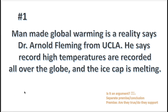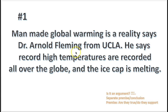We're going to grade this argument — is it a good argument or a bad argument? 'Man-made global warming is a reality, says Dr. Arnold Fleming from UCLA. He says record high temperatures are recorded all over the globe, and the ice cap is melting.' Is this an argument? Let's look for indicator words — do we see any premise indicators like 'because,' 'since,' or 'as'? I don't see any indicator words for conclusions either. Let's check if it's a non-argument — WAR-O. Is it a warning, advice, report, or opinion? It says 'says Dr. Arnold Fleming' and 'he says record high temperatures' — this looks like a report about something Dr. Arnold from UCLA said. So this doesn't seem to be an argument.